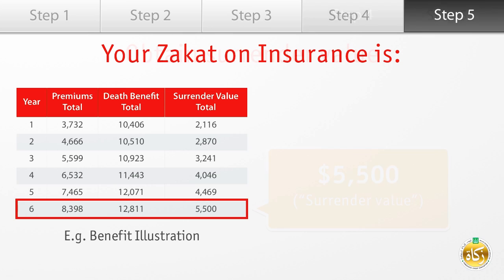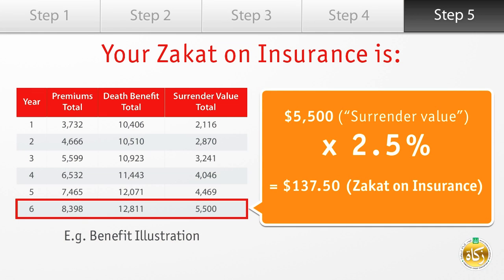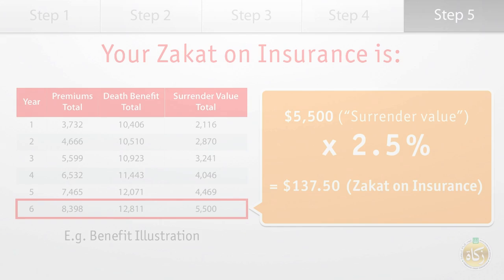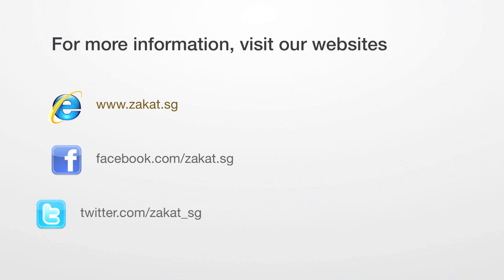Step 5: Take the surrender value and multiply the amount by 2.5%.